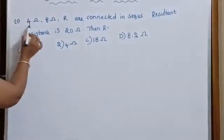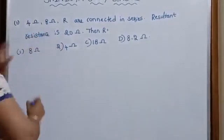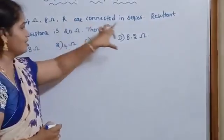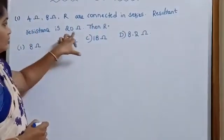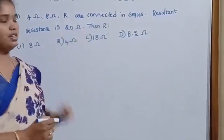First, given 4 ohms, 8 ohms, R ohms are connected in series. Then resultant resistance is 20 ohms. Then R is equal to?